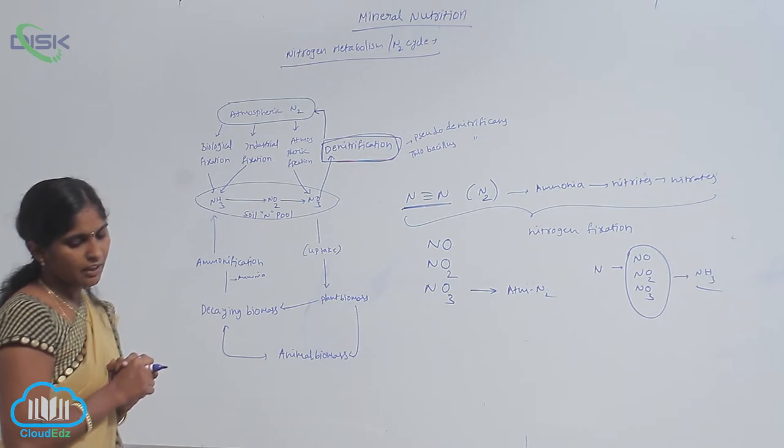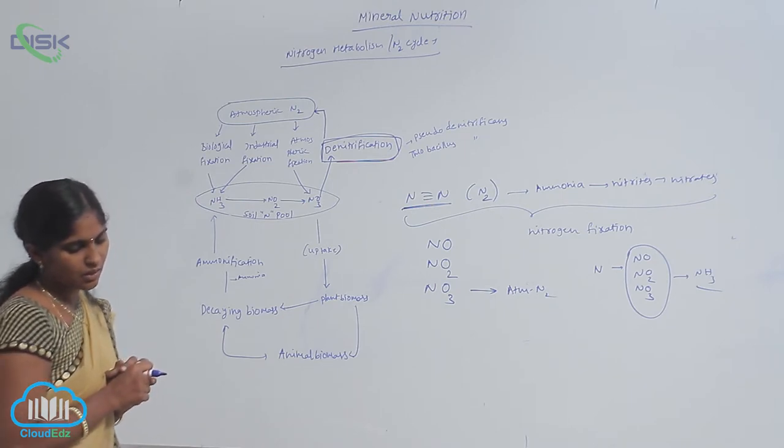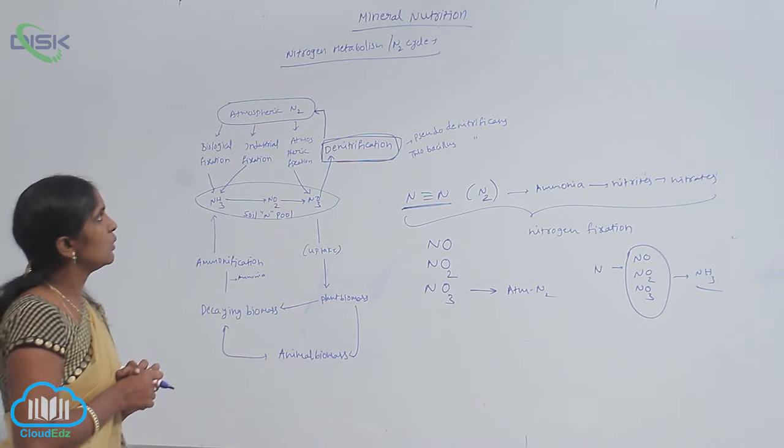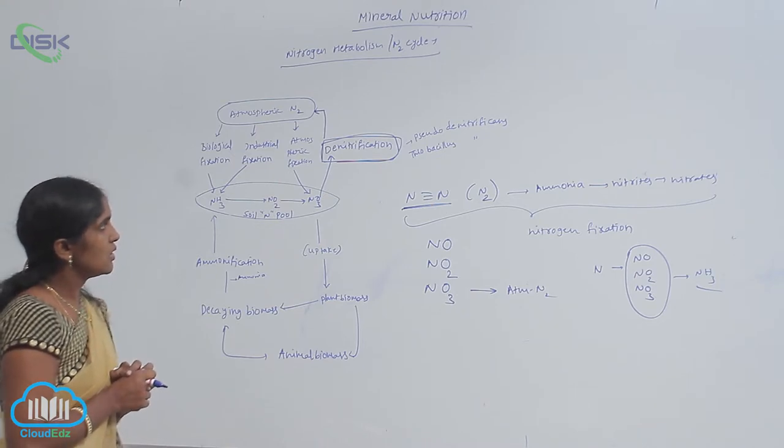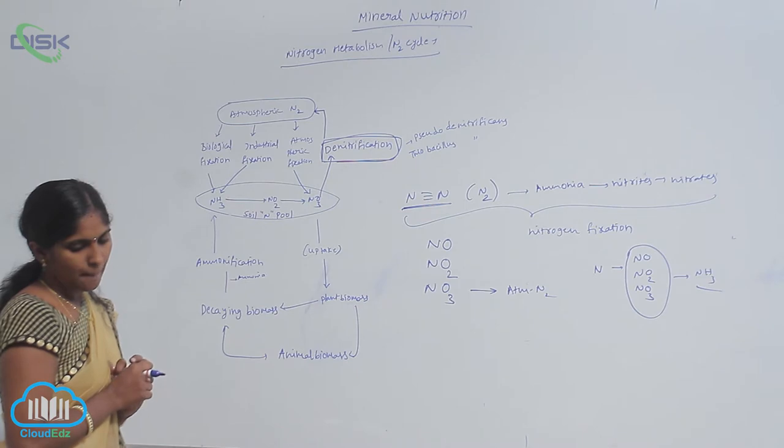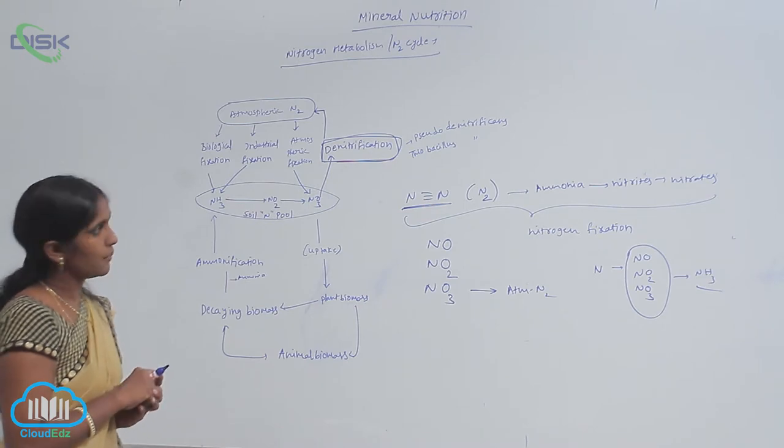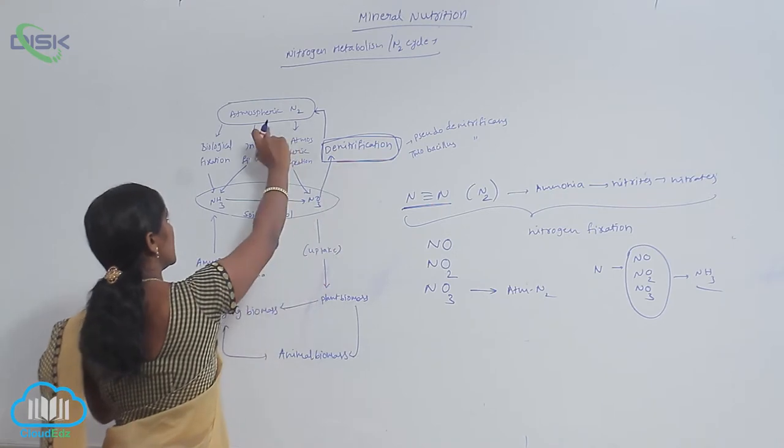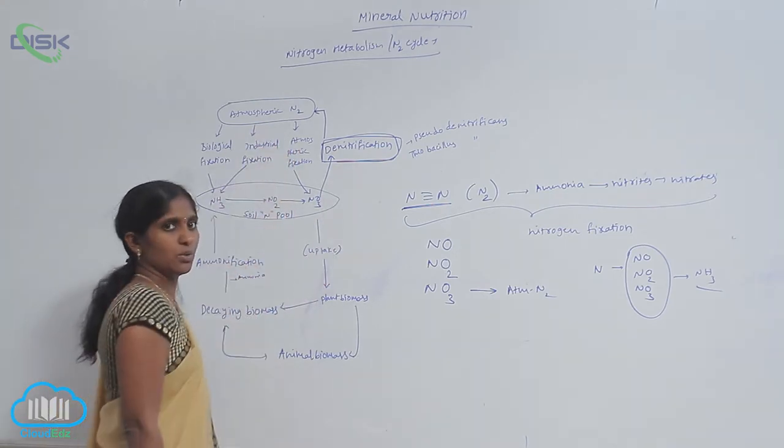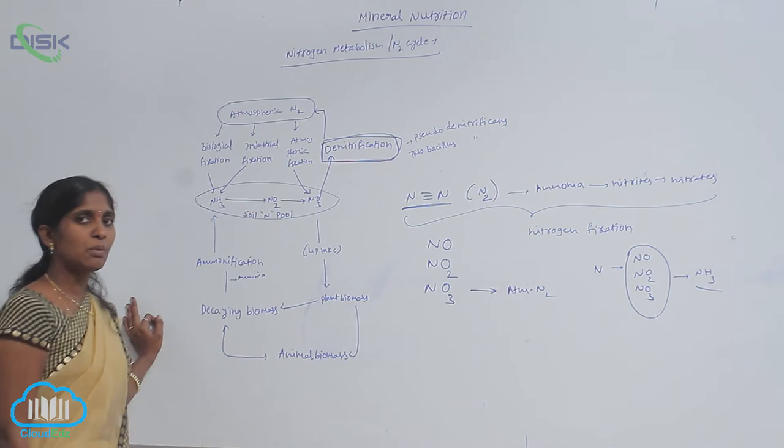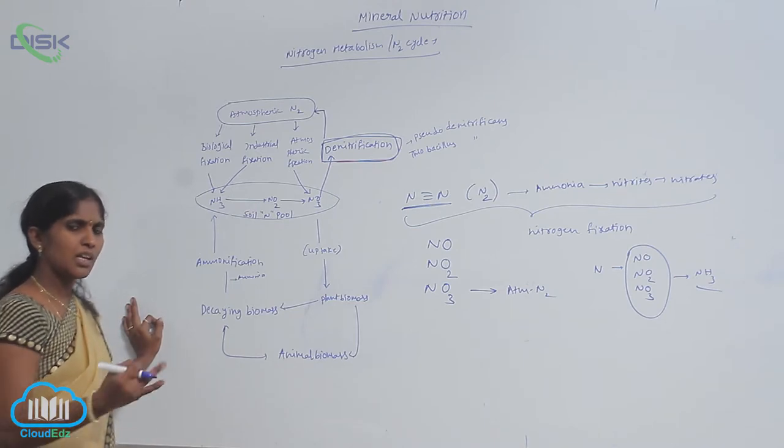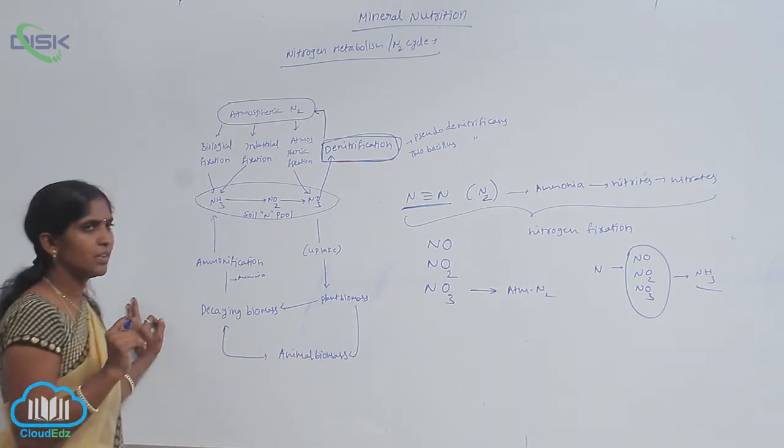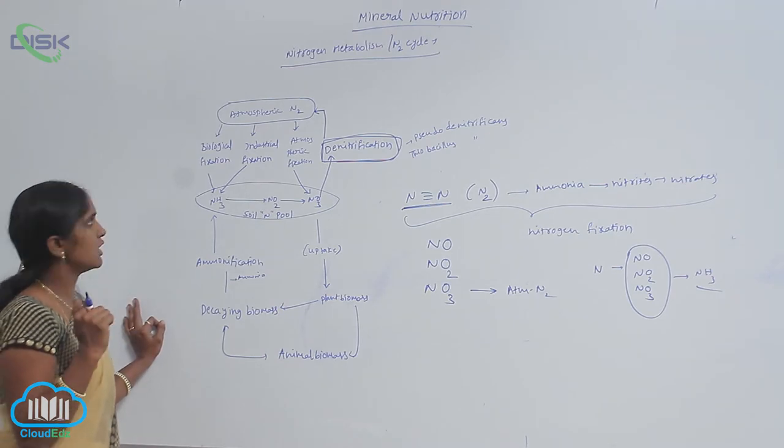The nitrate present in the soil is reduced into nitrogen. So this is denitrification. It is also one of the sources for atmospheric nitrogen. So the sources of atmospheric nitrogen are industrial, atmospheric fixation, and also denitrification.